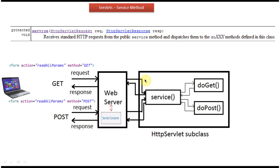The service method is the one that decides which method to call. Since the request is a GET request, it will call the doGet method. The doGet method will process the HTTP request and send the response back to the service method. Then the service method sends the response back to the Servlet container, which sends it to the web server, and the web server sends it back to the client.